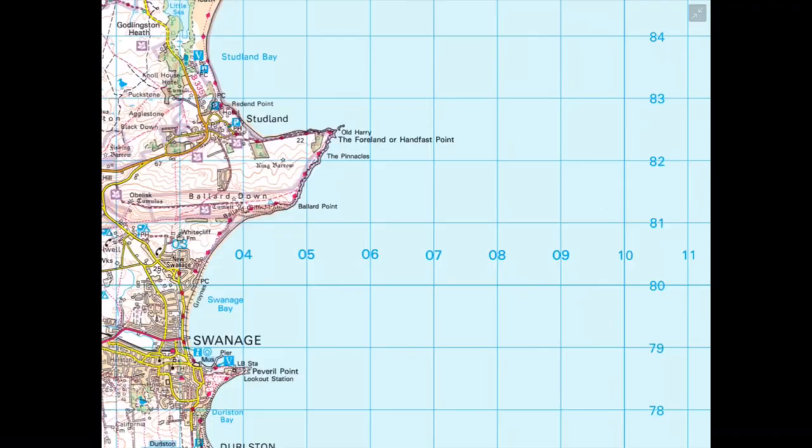And then if we take that example of Swanage Bay and look at an OS map for this particular region of the UK, we can see on the screen that I am sectioning off those areas of more resistant and less resistant rock onto the OS map.